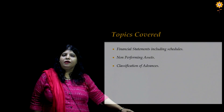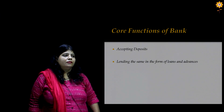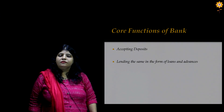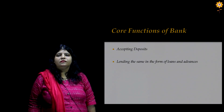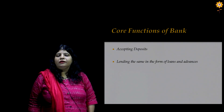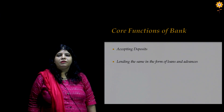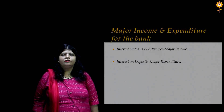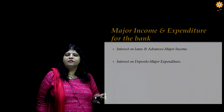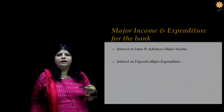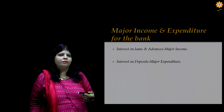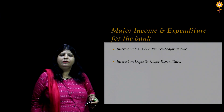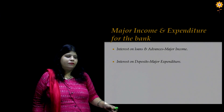These are the topics which we'll be covering in the coming time. Before we move on to the actual formats of banking company final accounts, it is very essential to understand the nature of business which a bank undergoes. Any bank will have two core functions: accepting deposits from the public and lending the same in the way of loans and advances. There will be two major components — one is major income and one is major expenditure for the bank. Interest paid on deposits is going to be the major expenditure, and interest received on loans and advances is going to be the major income for any bank.